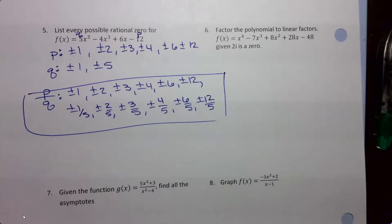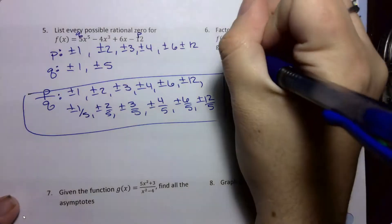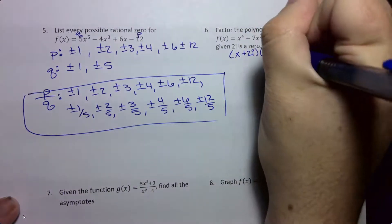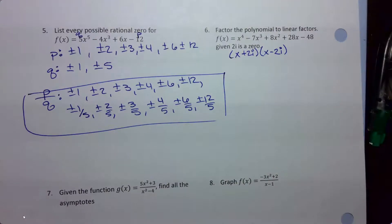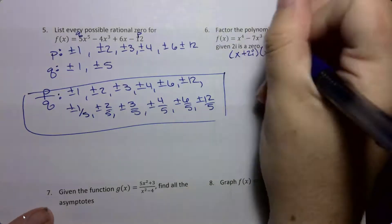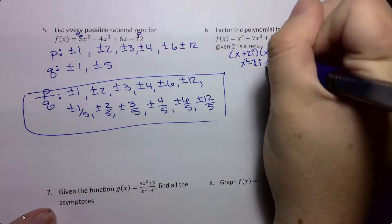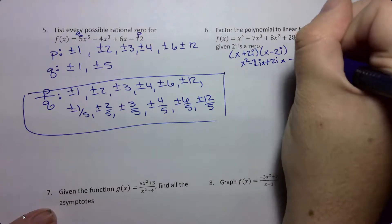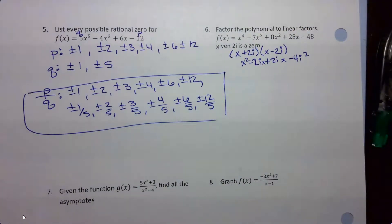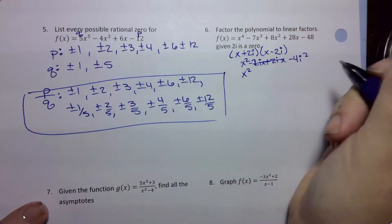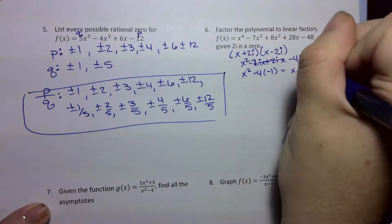Number 6 wants me to factor the polynomial to linear factors given that 2i is a zero. Imaginary numbers come in pairs, so I have x plus 2i and x minus 2i. I want to multiply these together — if I FOIL, I get x squared minus 2ix plus 2ix minus 4i squared. If I simplify, the middle terms cancel out and negative 4 times negative 1 gives x squared plus 4.